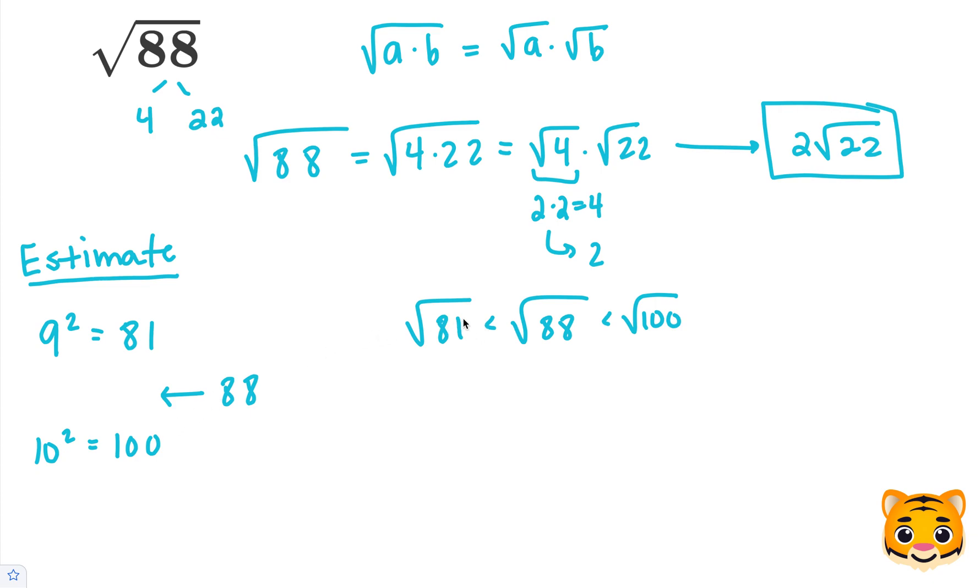Now we can rewrite the square root of 81 as 9, because 9 squared is 81. We can rewrite the square root of 100 as 10, because 10 squared is 100. So the square root of 88 lies between 9 and 10.